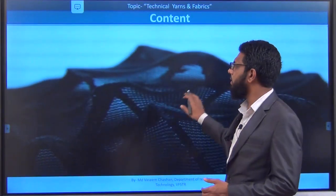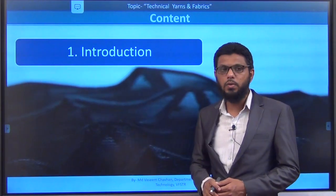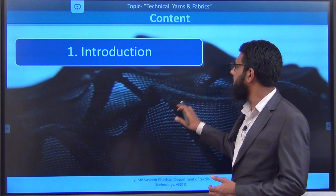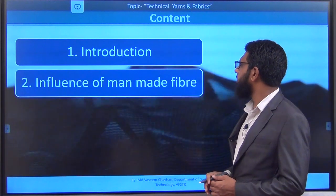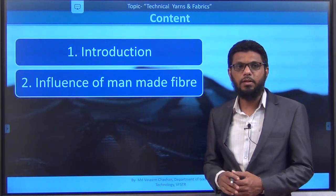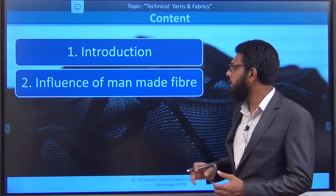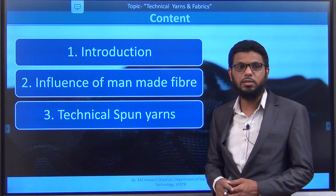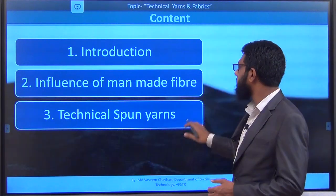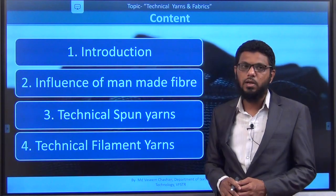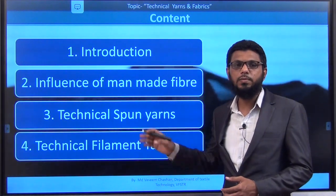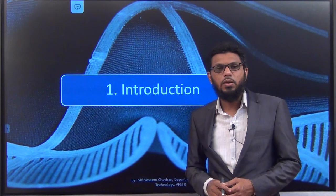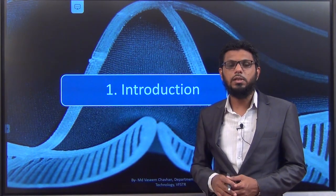So let's start with the class. The content which we are going to discuss today is: first, the introduction of fibers and yarn for technical textile; second, the influence of man-made fiber on technical textile; third, the various types of spun yarn and their technical functions; and similarly, the different types of technical filament yarn.